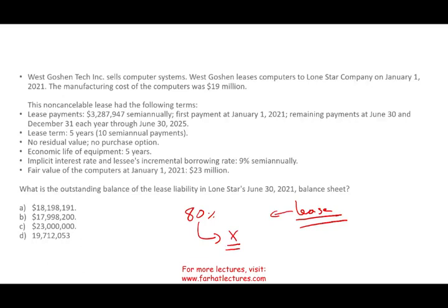The software is going to say: this candidate either answered that question incorrectly by mistake, or this individual does not understand leases, which is a major topic on the exam. They will give you a second question about leases — you get it wrong. A third question — you get it wrong. Immediately, you are heading to a grade below 75. You cannot take your chances on the CPA exam. You have to be confident in all topics. The software will detect your weakness, and if you have weakness in major areas, you will fail the exam.